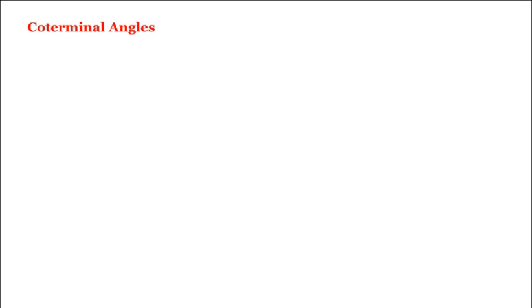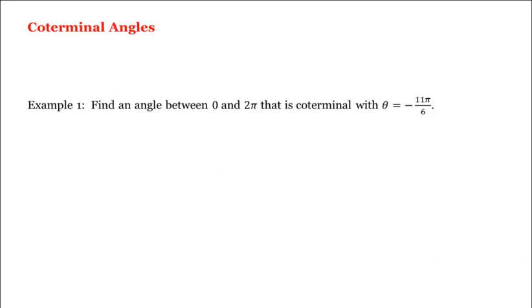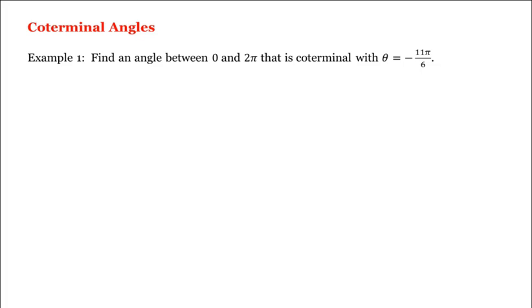Let's look at coterminal angles. For example, let's find an angle between 0 and 2π that is coterminal with negative 11π divided by 6. Two angles are coterminal if they share the same initial and terminal sides. So let's sketch our angle here in standard position.